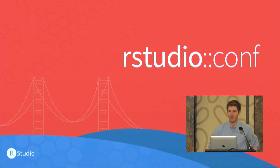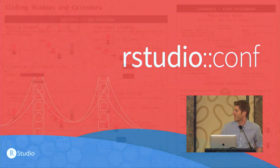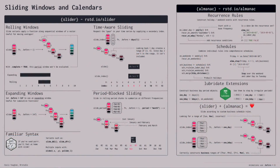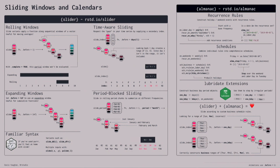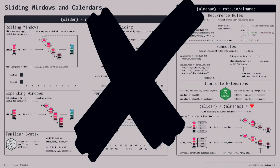My name is Davis Vaughn, I'm a software engineer at RStudio. As Max said, this was supposed to be my beautiful e-poster that was going to be shown at the introduction, and it was not. So I'm going to talk about this, but this looks horrible, so I'm just going to scrap it entirely and start over.